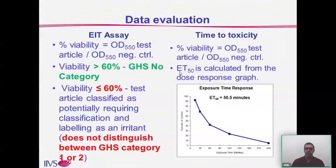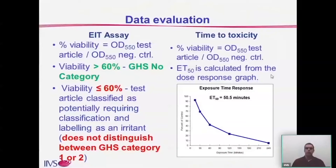For the time-to-toxicity approach, percent viability is calculated for each exposure time, a dose-response graph is plotted, and the ET50 is calculated from this graph. We therefore have both the viability at each exposure time and the ET50 value, which can be used to compare formulations against one another.